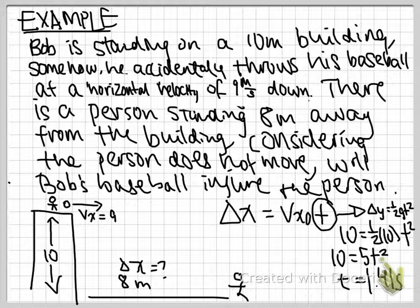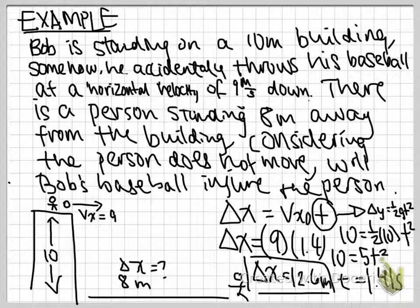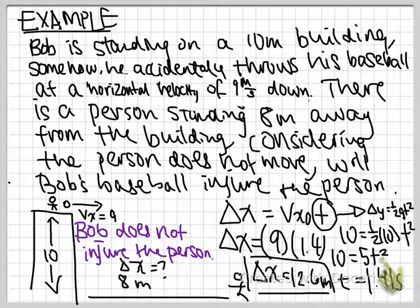So after that, we are going to plug 1.41 into the original equation, since we already know the horizontal velocity. And the displacement of the baseball is 12.6 meters, which means that Bob's baseball does not injure the person.